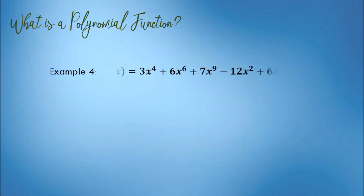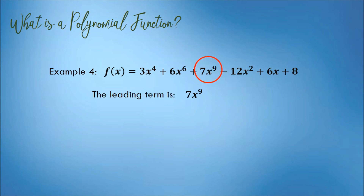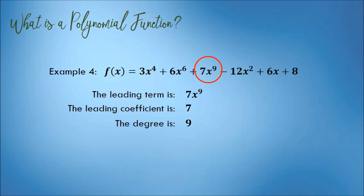Last example for this topic, we have this function: f(x) = 3x raised to 4, plus 6x raised to 6, plus 7x raised to 9, minus 12x raised to 2, plus 6x, plus 8. This is a polynomial function because all exponents are positive integers. The leading term is 7x raised to 9, because even though it is not arranged in descending order, it has the highest exponent. The leading coefficient is 7, and the degree of this polynomial function is 9.